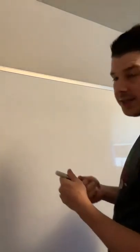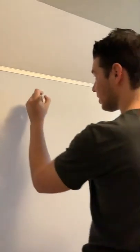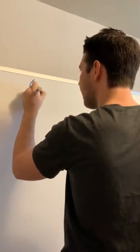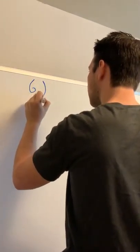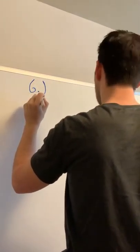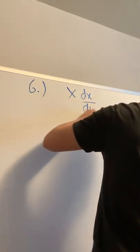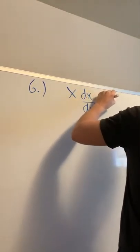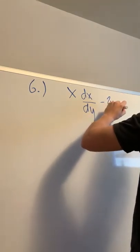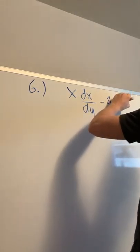I'm going to attempt lab number six, which is written as x dx over dy minus 2y equals x squared.